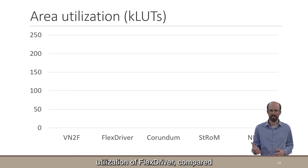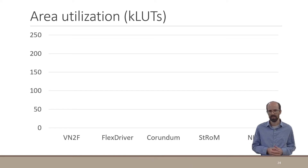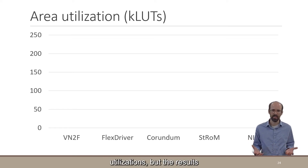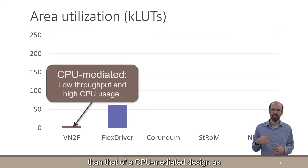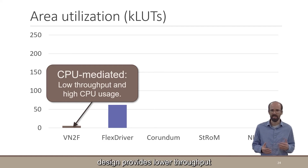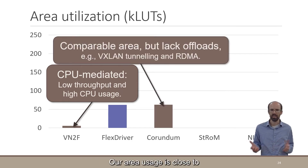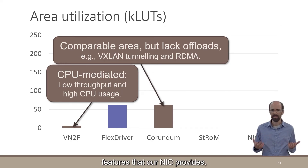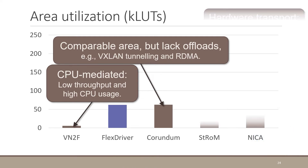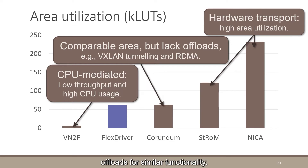Let's look at the area utilization of FlexDriver compared to published related work using Xilinx UltraScale family FPGAs, shown in lookup table utilization — results are similar for other resources. FlexDriver's area is higher than a CPU-mediated design, as expected, but the CPU-mediated design provides lower throughput and requires additional CPU cores. Our area usage is close to CoRAM, an FPGA SoftNIC, however CoRAM lacks features our NIC provides such as tunneling and RDMA. StRoNG and NICA include a hardware-implemented transport layer and as a result require more area than FlexDriver, which can use the NIC's offloads for similar functionality.